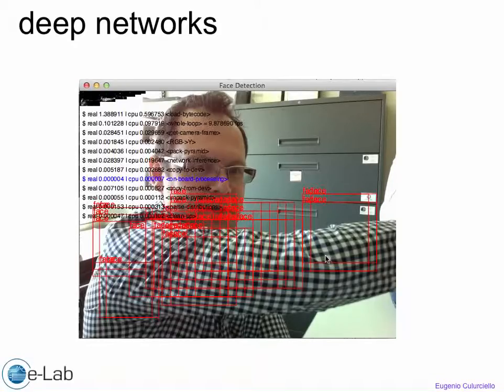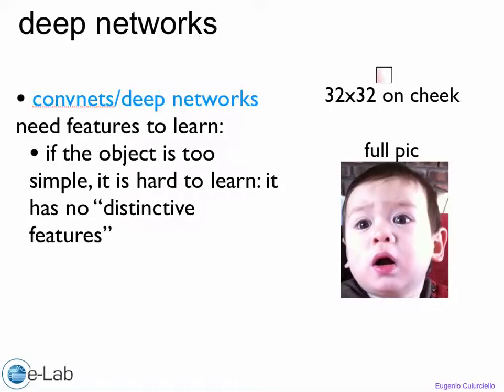You could also have the opposite problem. If you train on a face that's great, but if you train on something smaller, you might not be able to learn things. Convnets and deep networks really need features to learn.